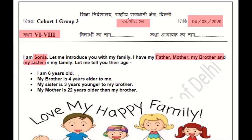Sonia is 6 years old. My brother is 4 years older than me. Elder means older, so we will add 4 to her age. So the brother's age will come to 10 years.